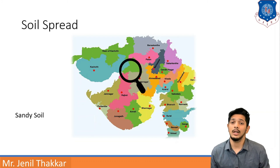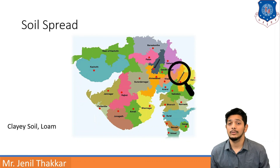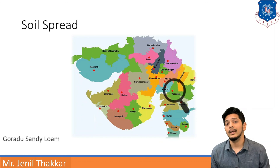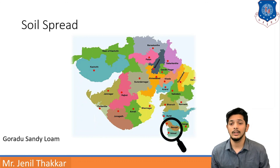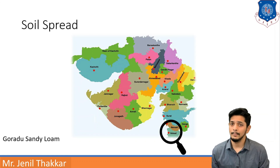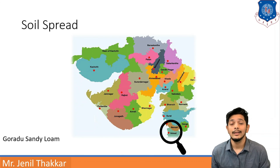In the central Gujarat region, near Ahmedabad, there is sandy soil. In north Gujarat there is clay soil as well as loam. In southern Gujarat there is goradu sandy loam kind of soil. Goradu means its texture is whitish, which is why it is known as goradu — a combination of goradu soil, sandy soil, and loam.